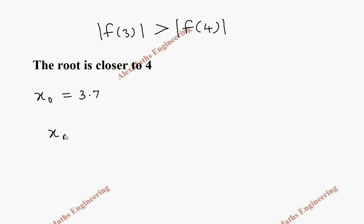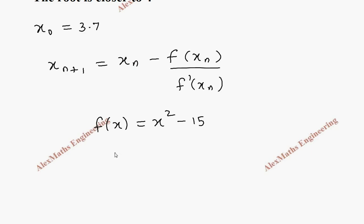And by Newton-Raphson's method, we have a formula. x n plus 1 is xn minus f of xn by f dash of xn. From the given equation, we have f of x as x square minus 15. So we can find its derivative equal to f dash of x, which is 2x.